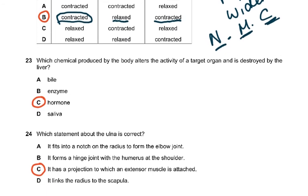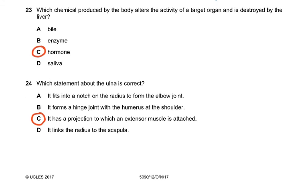Question 23: which chemical produced by the body alters the activity of a target organ and is destroyed by the liver? This is the exact definition from the syllabus — it is a hormone. It is produced by the body and alters the activity of a target organ.